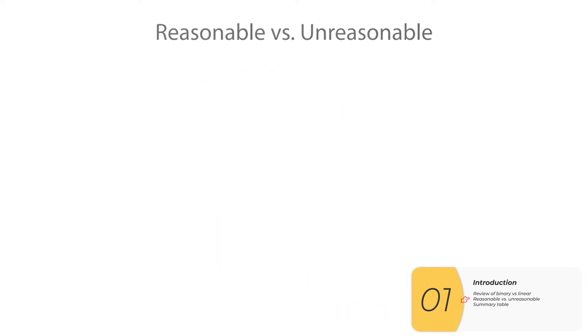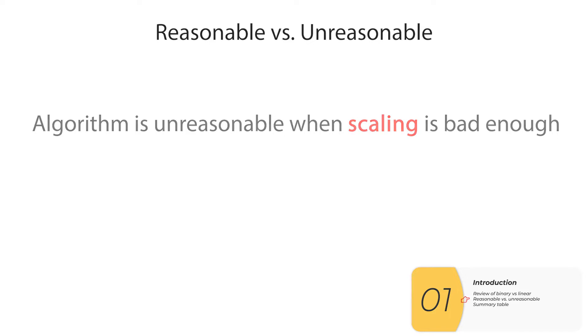So with this definition of scaling, we move on to two new vocab words: reasonable and unreasonable. And an algorithm is going to be unreasonable when the scaling is bad enough.